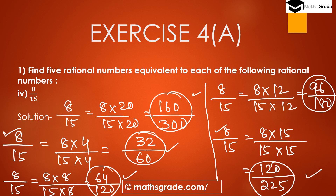So to summarize how to find equivalent rational numbers: if we multiply the same number in both the numerator and denominator of a given rational number, the result is an equivalent rational number of the given rational number. This is the formula.